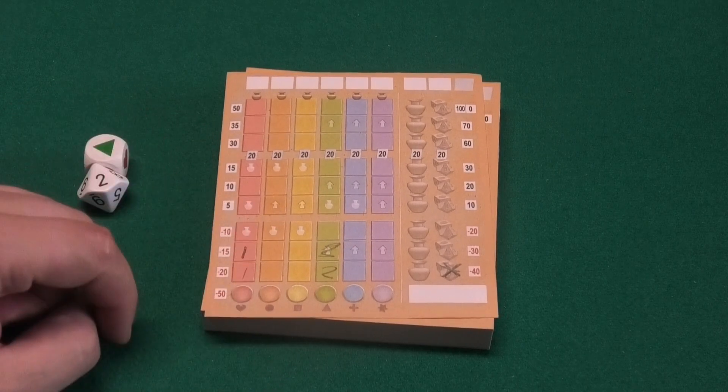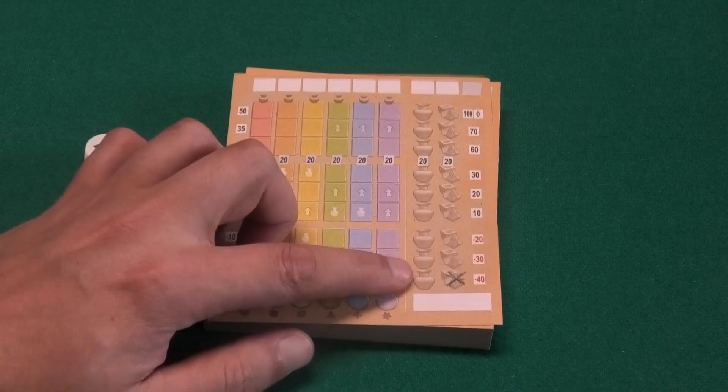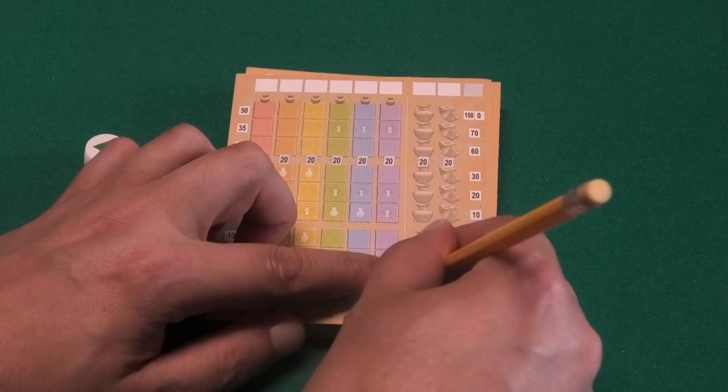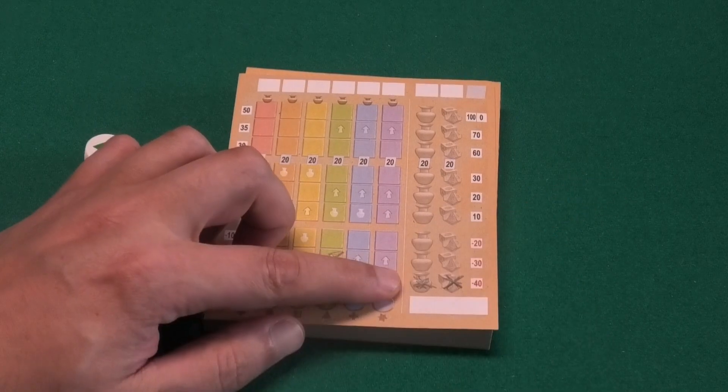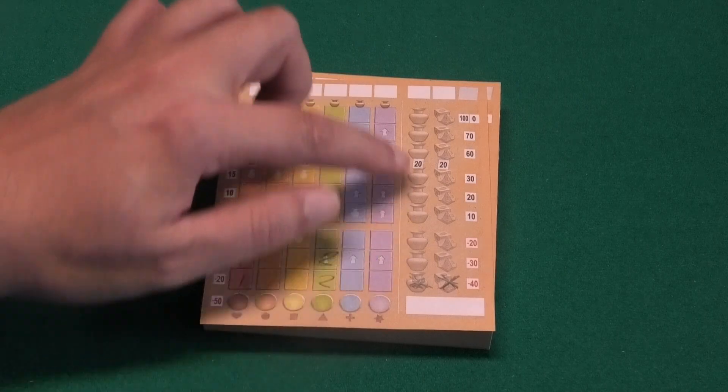Then there are these artifacts. Whenever you pass or cross over an artifact, you can also cross one over, check one over here. And also this will score you more points the higher you get in this column.